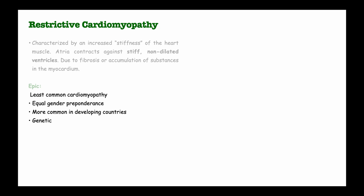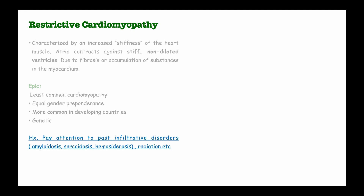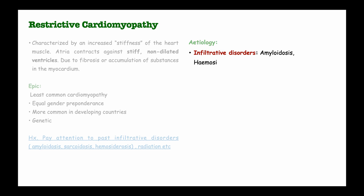Before looking at the etiology, we must always pay attention to past infiltrative disorders such as amyloidosis, sarcoidosis, hemosiderosis, and even radiation when taking history from patients. The first etiology of restrictive cardiomyopathy is infiltrative disorders — for example, infiltration with amyloid plaques, hemosiderosis, and sarcoidosis.